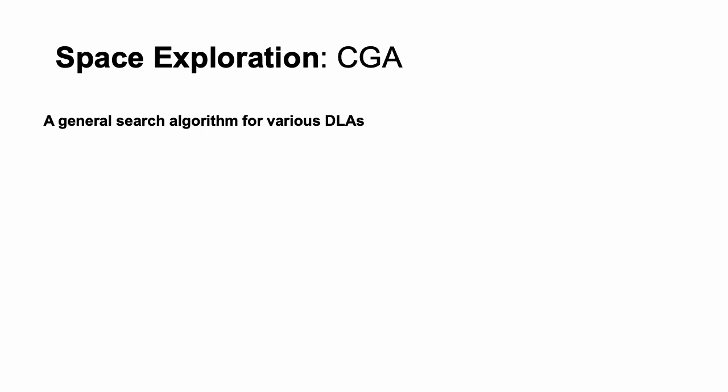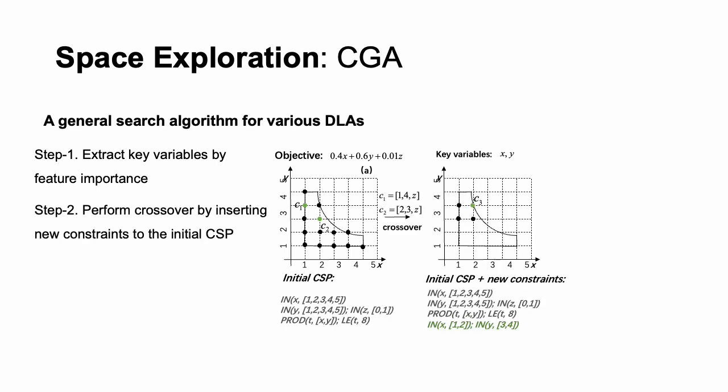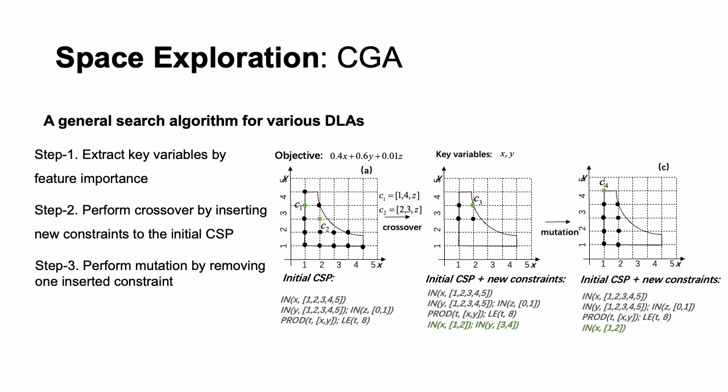Here is our proposed constraint-based genetic algorithm. It is designed as a general search algorithm for various DLAs. For a constraint optimization problem shown in the figure, we first extract its key variables according to the feature importance. The key variables are x and y for this problem since they are mostly related to the objective function. For two valid solutions, C1 and C2, we perform crossover by adding new constraints to the original CSP. Then to increase exploration, we perform mutation by removing one newly added constraint from the CSP. The result of crossover and mutation is a new CSP. We then solve the new CSP randomly to obtain valid solutions.